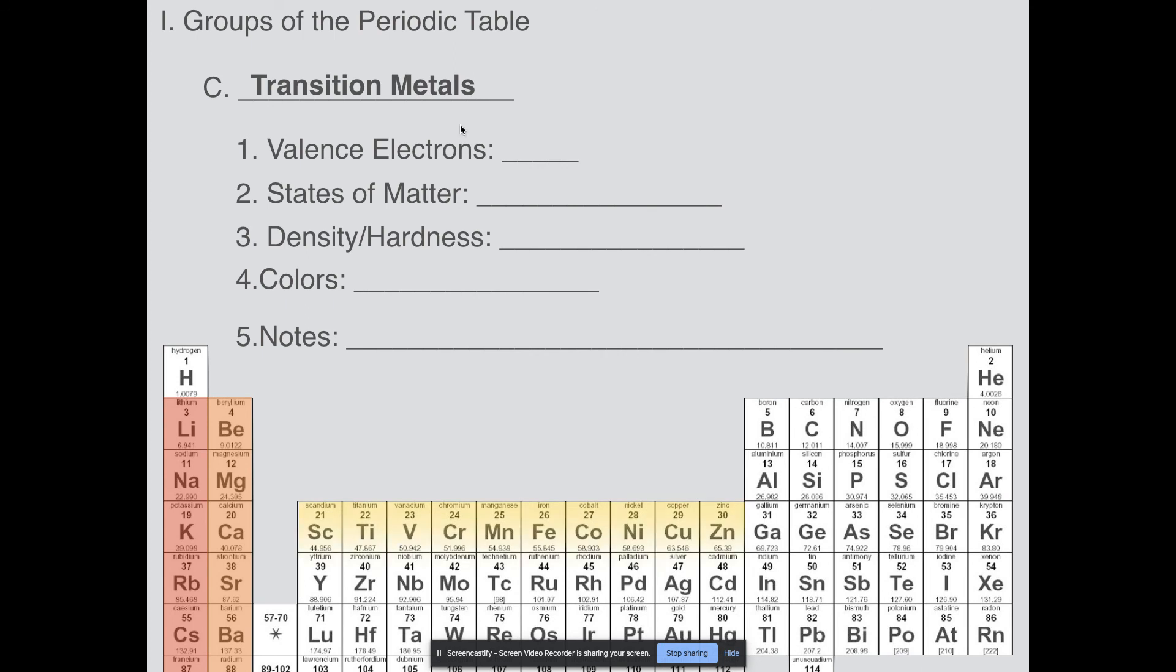Next, transition metals. This entire portion of the periodic table is going to be the transition metals. Valence electrons: normally between one to three. I guess we've done already electron configurations, so I can tell you this is the D block of the electron configuration stuff we were talking about. You can notice there are 10 elements here and these 10 elements correspond to the 10 electrons that you can actually have in the D block. States of matter: all of them are solids except for HG, that is mercury. It's a liquid at room temperature.